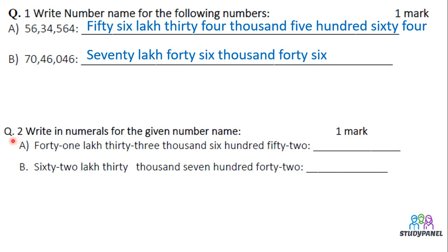Now second question: Write in numerals for the given number name. Here we have a number name and we have to write the numerals. So first, 41 lakh — what do we have to do? First we have to write 41 lakh. How many zeros are we going to write? After that, we have to write 33,000.